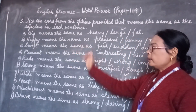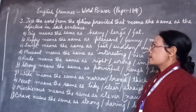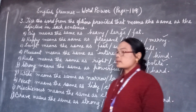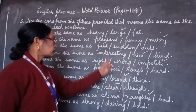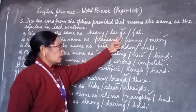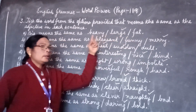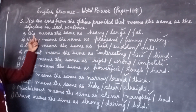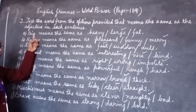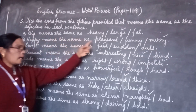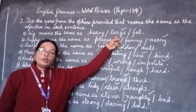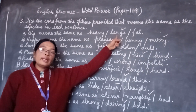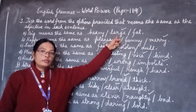In number A, 'big' means the same as — the options given are heavy, large, and fat. The correct meaning of big is large. So we will take the word large and put a tick mark on it.